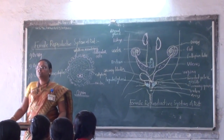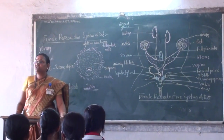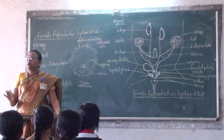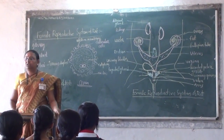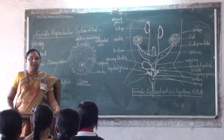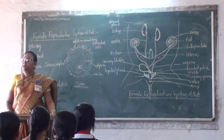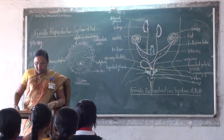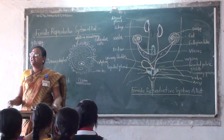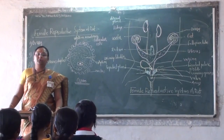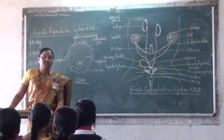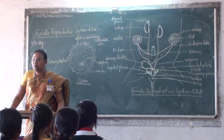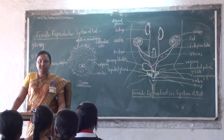Yesterday we studied the human reproductive system. The female reproductive system is typically applied to the human reproductive system. The human reproductive system includes the following parts.